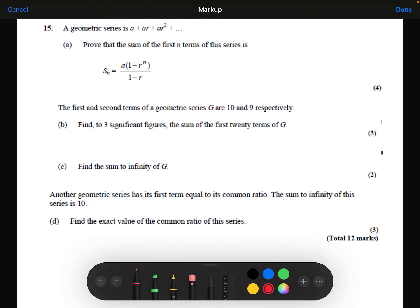We're then told that the first and second terms of a geometric series G are 10 and 9. So the first term is 10. The second term, AR, is 9. We need to find, to three significant figures, the sum of the first 20 terms of G.